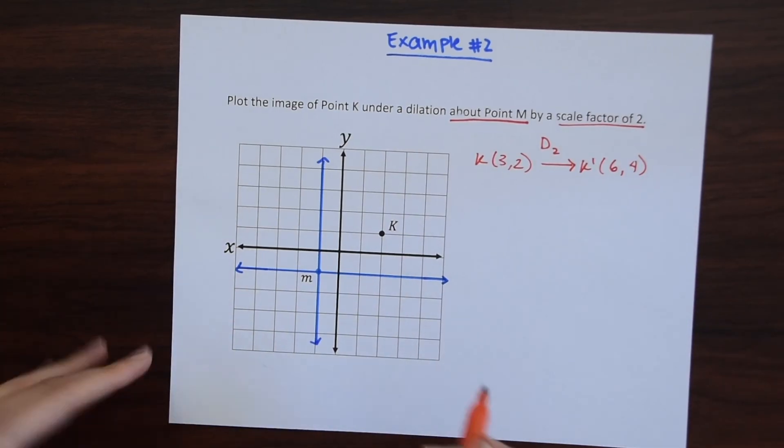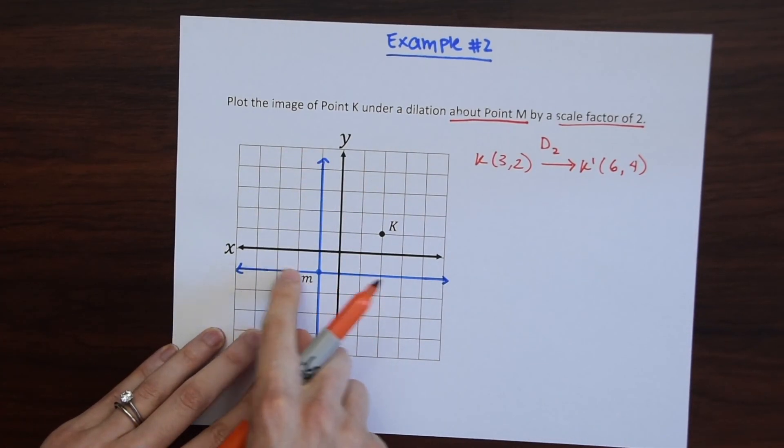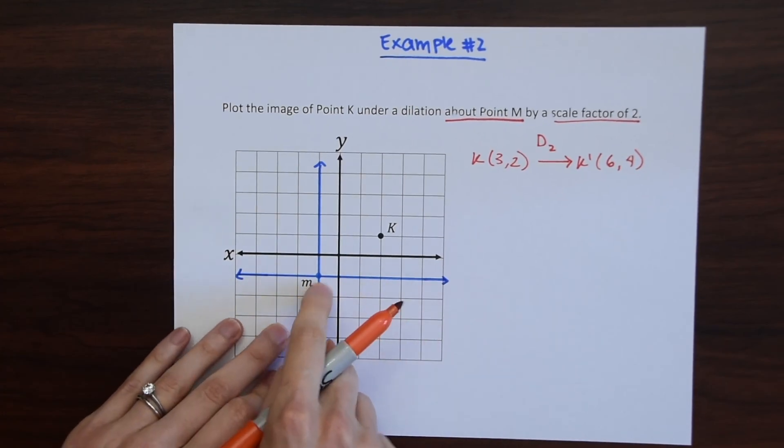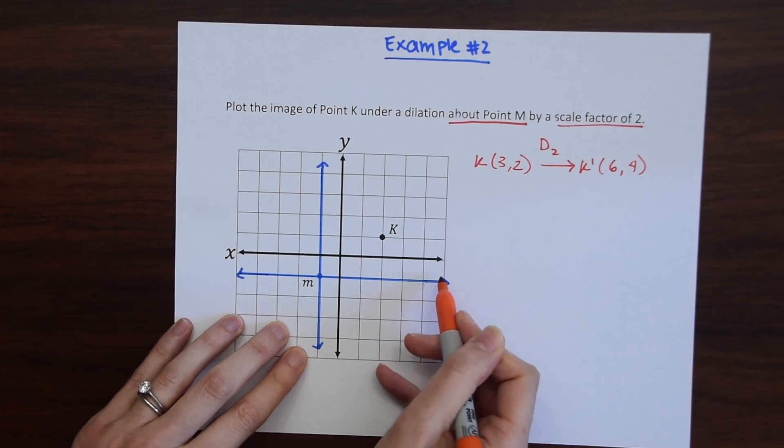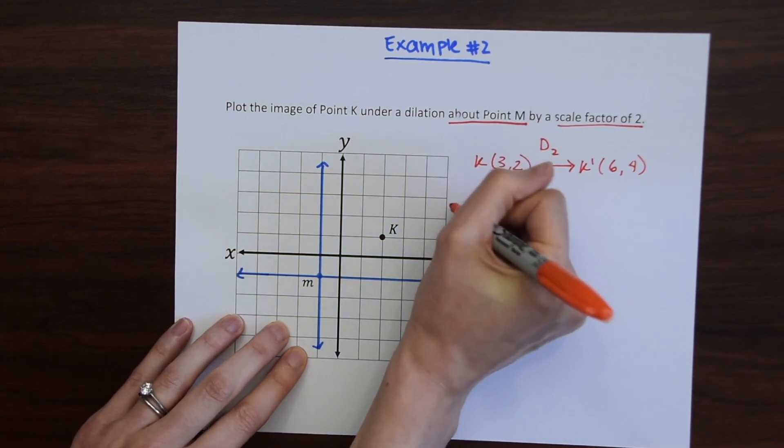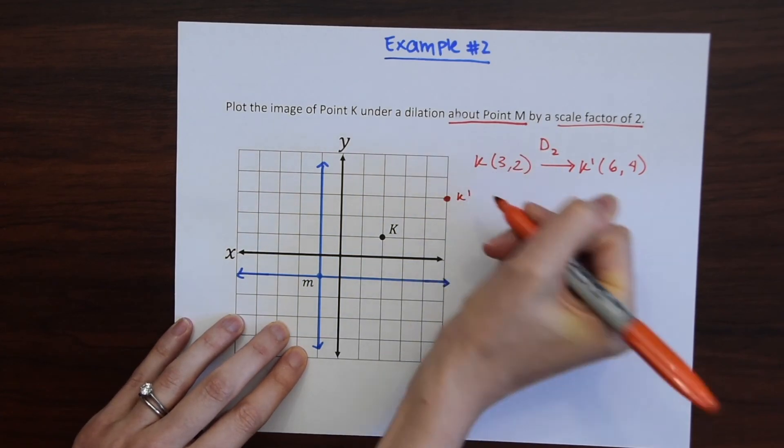So to draw our newly dilated point we're going to go back to our blue axis that starts at M and just go to (6, 4): one, two, three, four, five, six and then up four, one, two, three, four, and then just label our new point K prime.